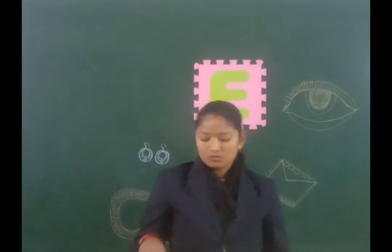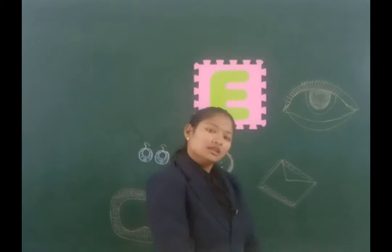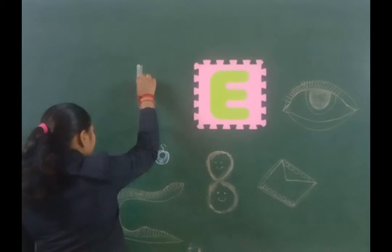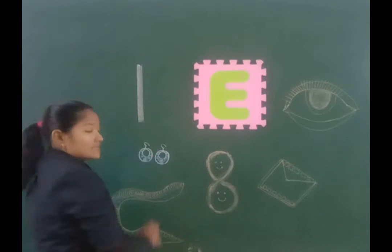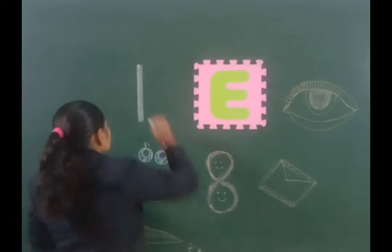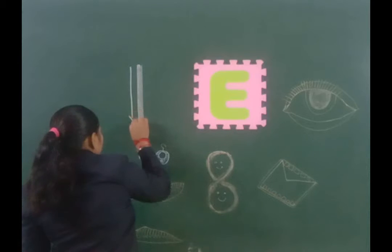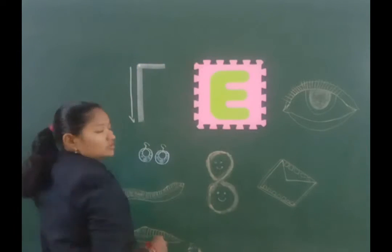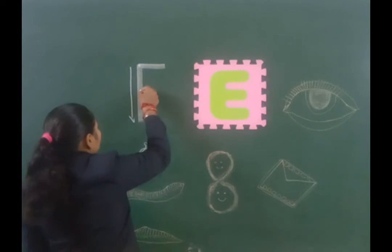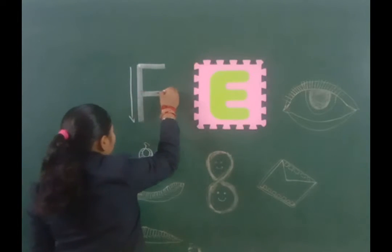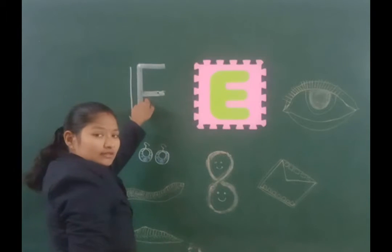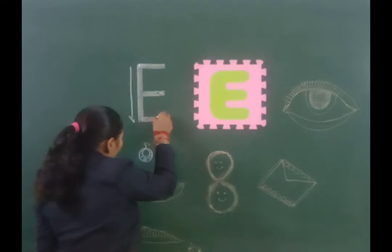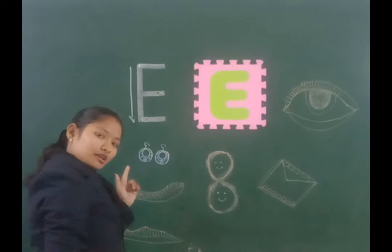Now we will learn how to write letter E. From top to bottom, one standing line. Then one slipping line on top. Then one slipping line in the middle. Then one more slipping line at the bottom. It's letter E.